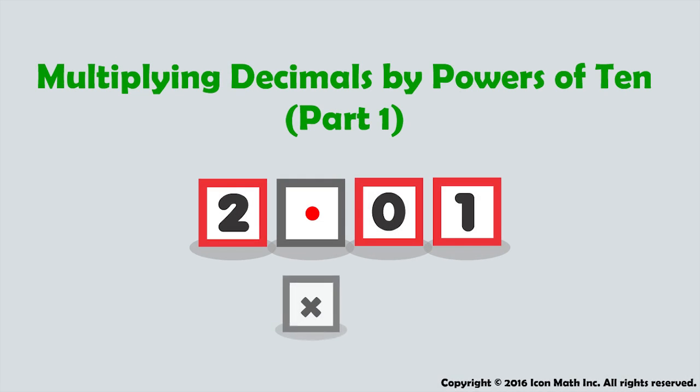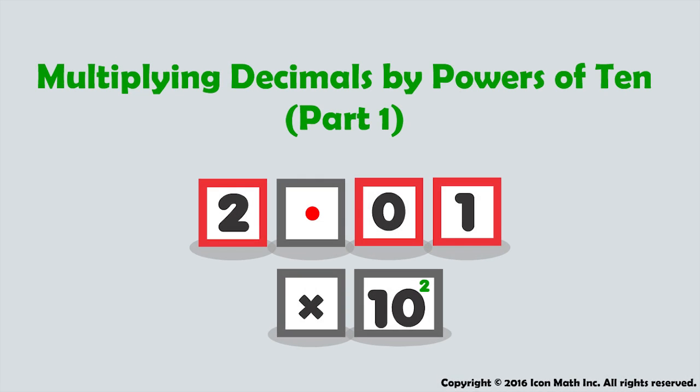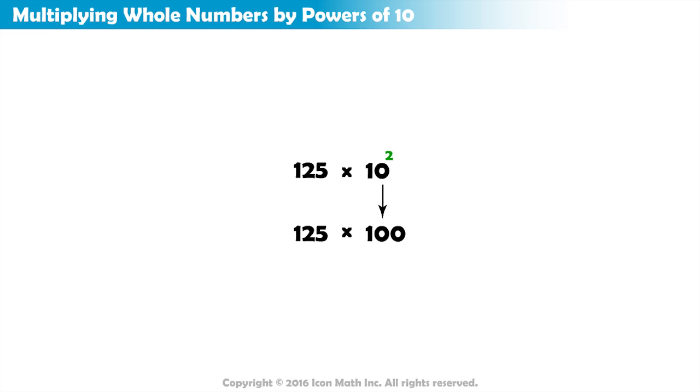Multiplying Decimals by Powers of 10. As we learned earlier to multiply a whole number by a power of 10, the rule is to add as many zeros to the right of the number as that power.